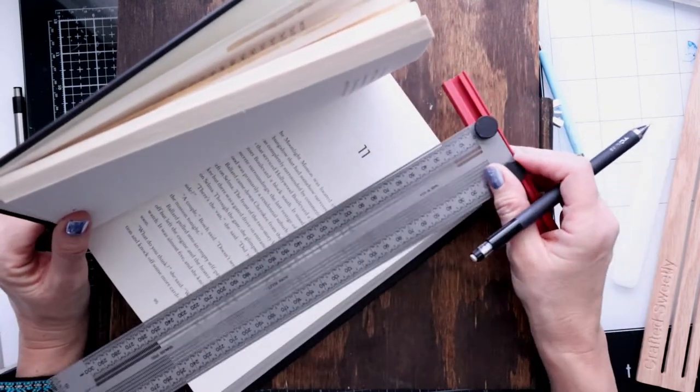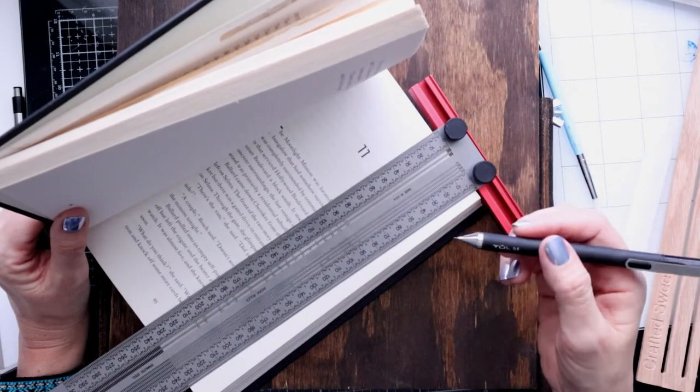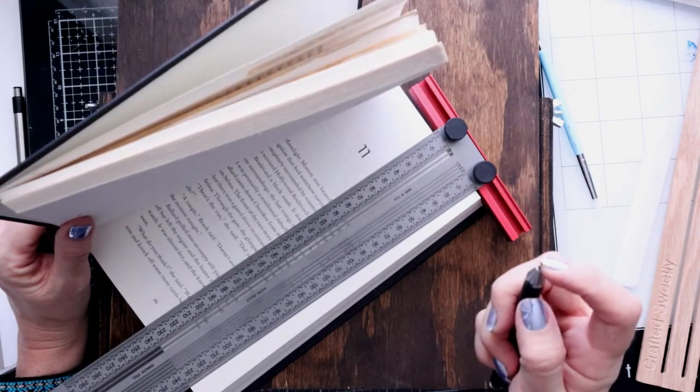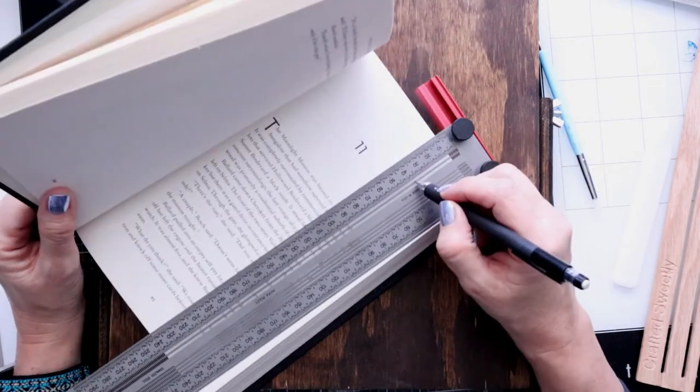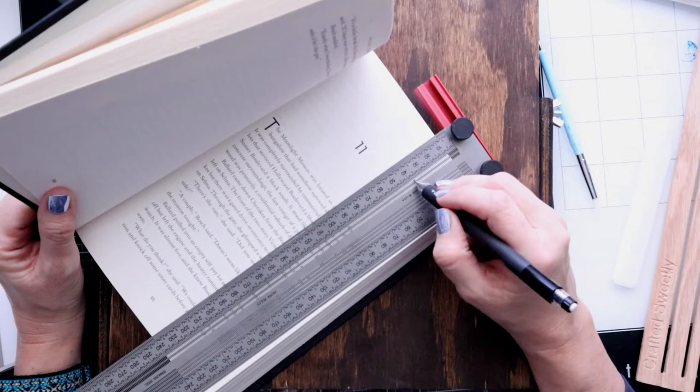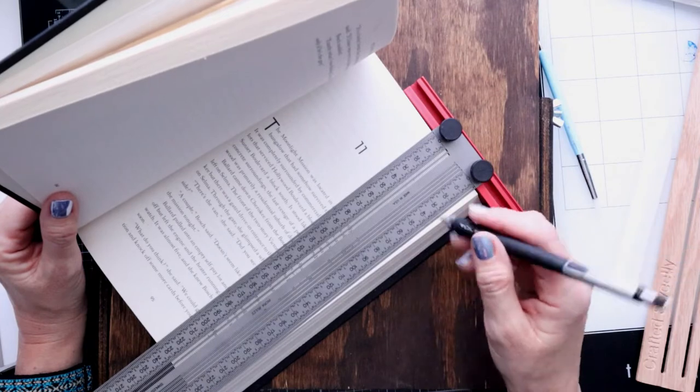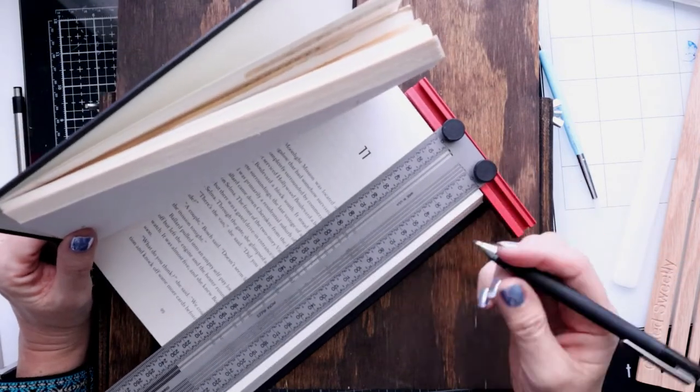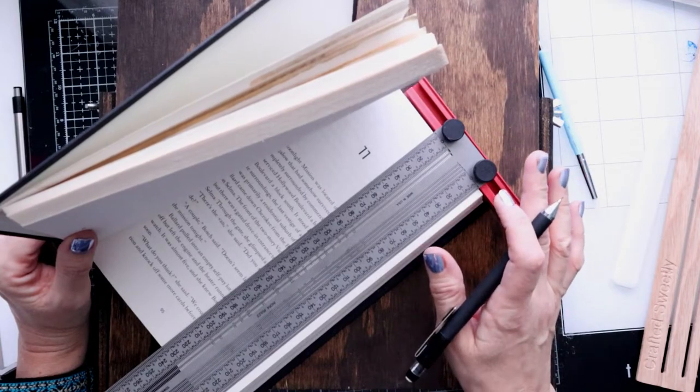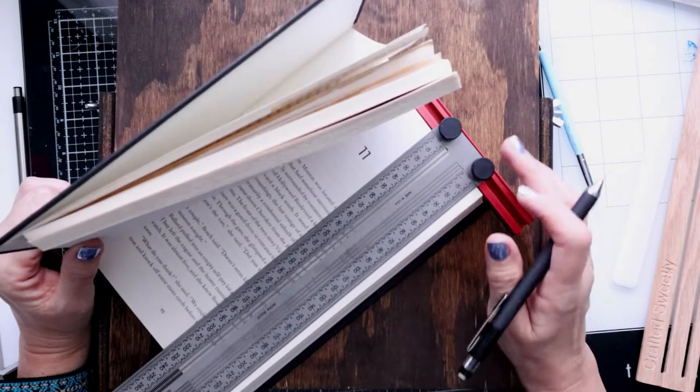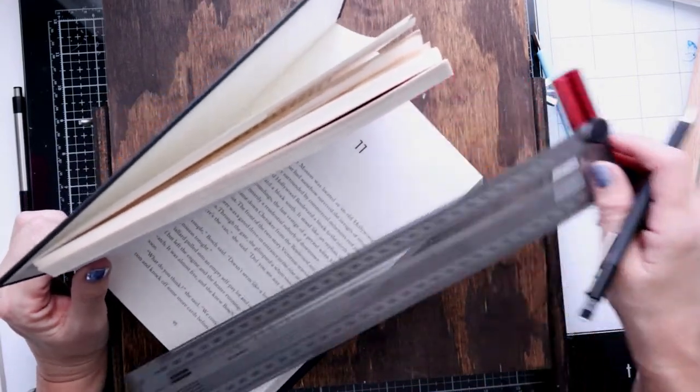When you use the Incra ruler, you do need to use a pencil that has a 0.5 millimeter lead in it. 0.7 will not fit through the holes here. And I haven't tried the slots with a 0.7, but it looks like the same thickness. So it is a 0.5 millimeter that I use. For all of the supplies that I'm mentioning, I have a link below in the description box.